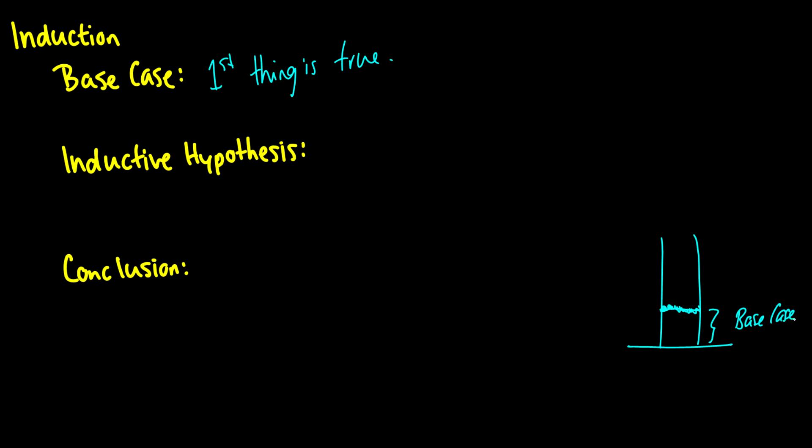Now, the interesting thing about the inductive hypothesis, which is the second part, is that you assume something is true for any number less than or equal to some number k. So what we're doing here is we're going somewhere up the ladder, and we're picking some arbitrary step. And this is k.